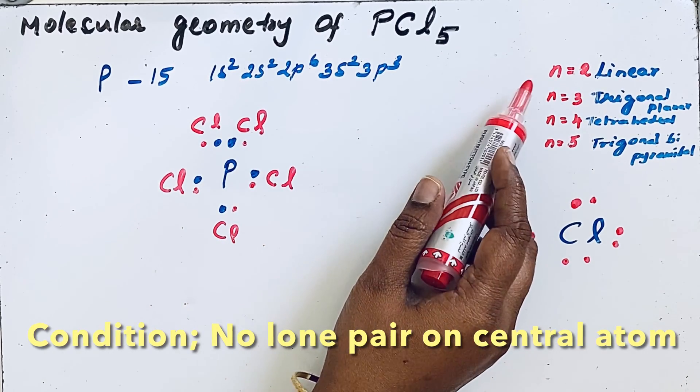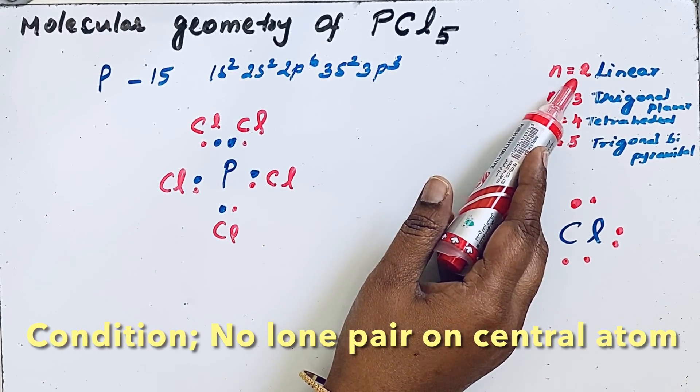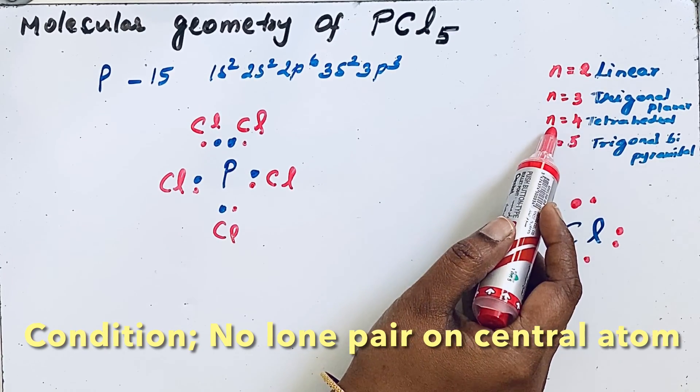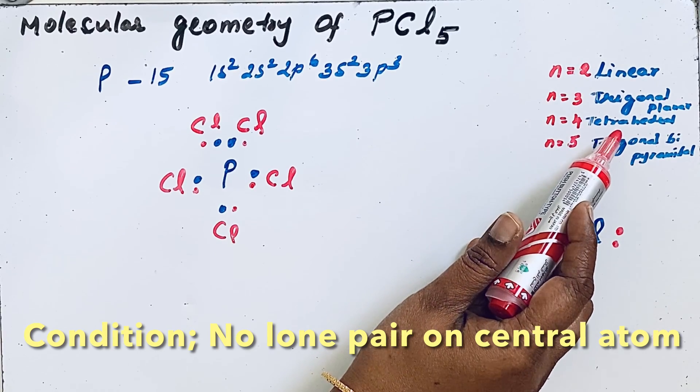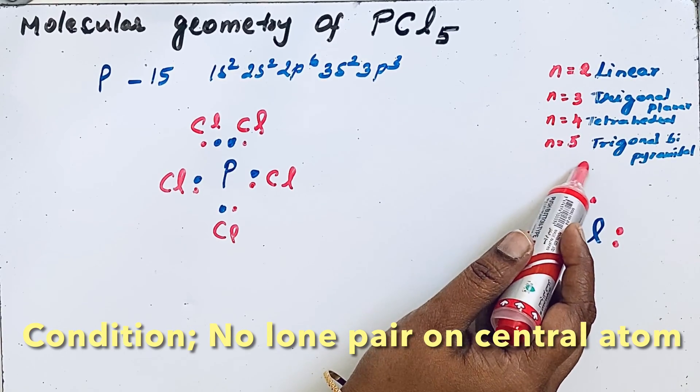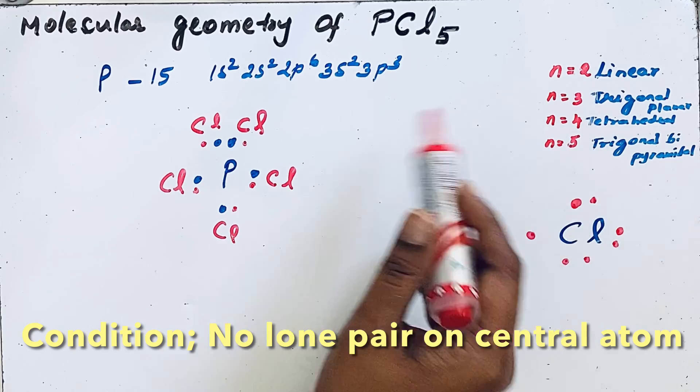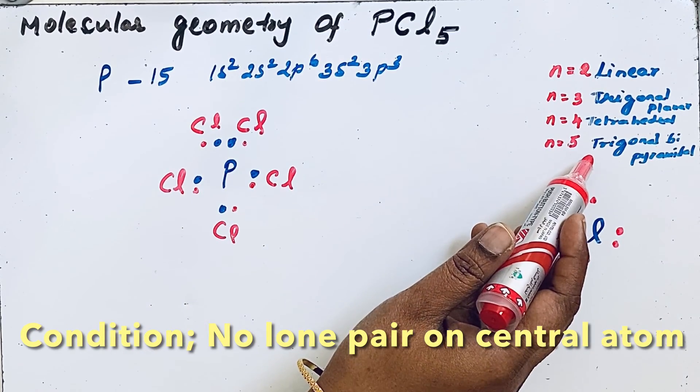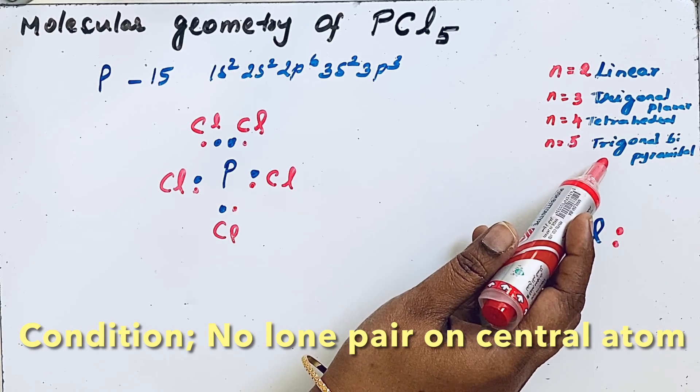Here N represents bond pair electrons. If N equals 2, the geometry is linear. N equals 3 gives trigonal planar. N equals 4 gives tetrahedral. N equals 5 gives trigonal bipyramidal. Since there are five bond pairs, the geometry in PCl5 molecule is trigonal bipyramidal.